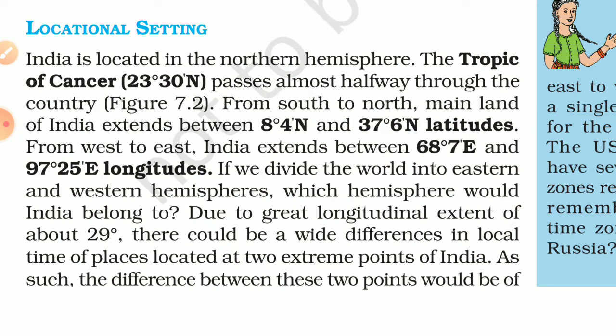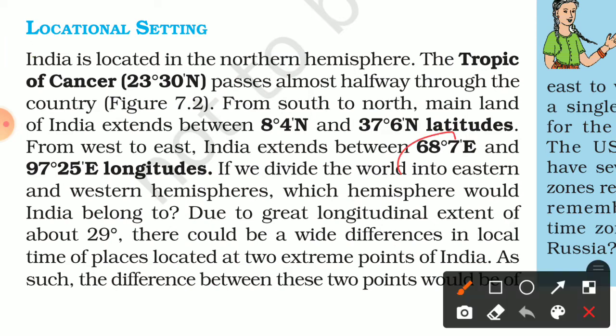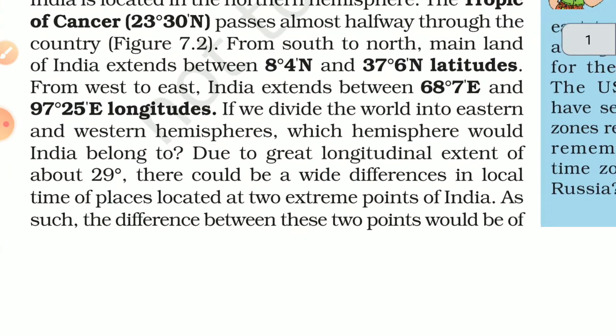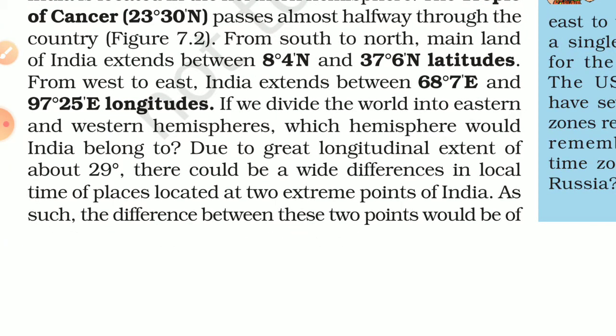From west to east, India extends from 68 degrees 7 minutes east to 97 degrees 25 minutes east longitude. This is the full latitudinal and longitudinal extent of India. If you haven't understood latitude and longitude, refer to the globe chapter — I have also uploaded that as the second chapter on my YouTube channel.